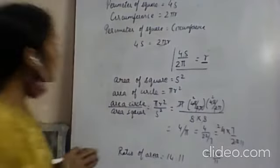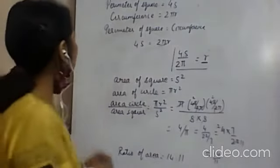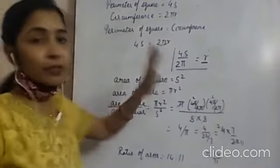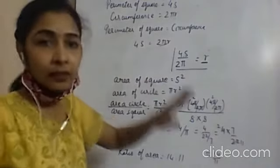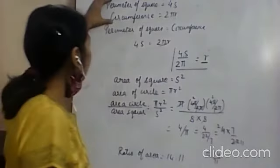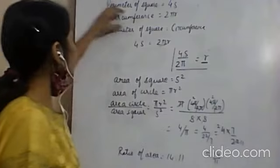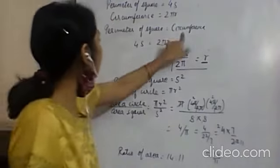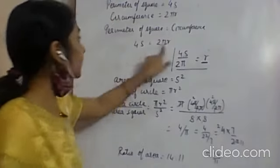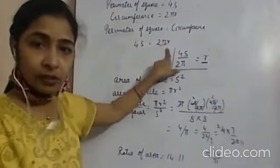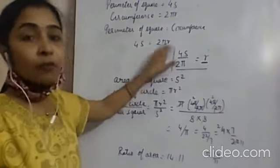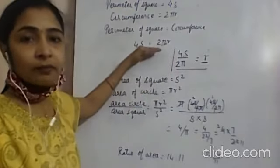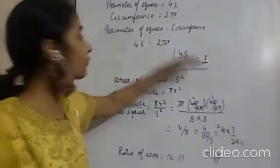Let me explain once more. First we were given that the perimeter of the square and circumference of the circle are equal. I wrote the formula for both and equated them: 4s equals 2πr. From this equation I calculated the value of r in terms of s.